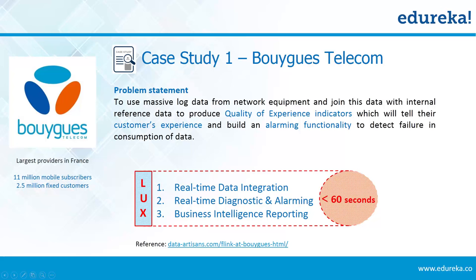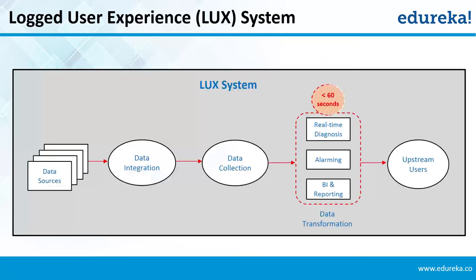Looking at the high-level LUX flow diagram: data is collected from different sources and gathered at a central data collection point. This data is then fed into the data transformation stage, which is responsible for real-time diagnosis, alarming, reporting, and analytics. Finally, the result goes to the end users. Bouygues Telecom used a design pattern pioneered by LinkedIn — collecting all the organization's data into a central log for real-time data subscription. However, they ran into a problem: a lot of data was coming in raw format, even in binary encoding with no business logic, making processing within 60 seconds impossible.